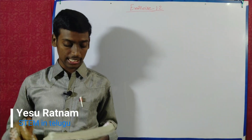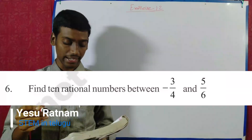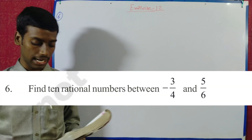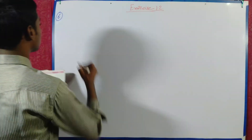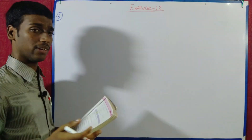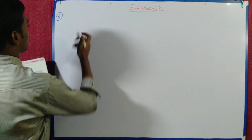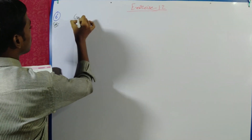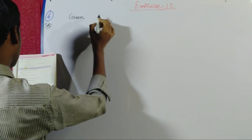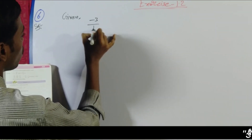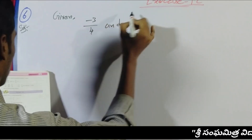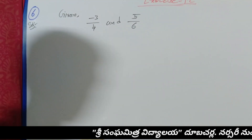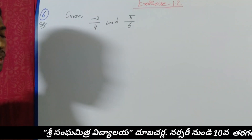In Exercise 1.2, we have to find 10 rational numbers between minus 3 by 4 and 5 by 6. Given rational numbers minus 3 by 4 and 5 by 6, we have to find 10 rational numbers in between.